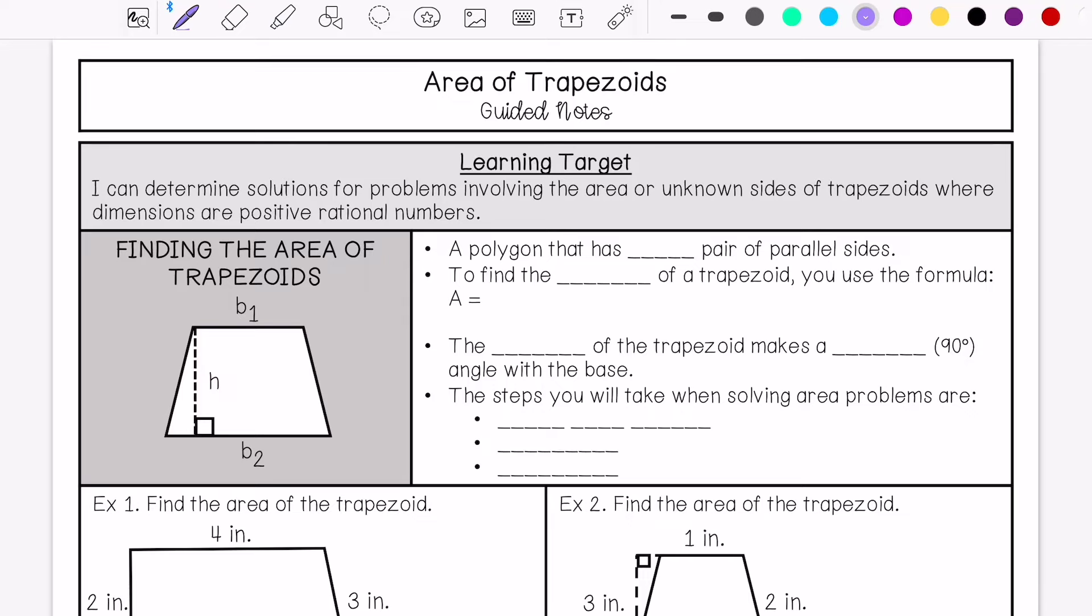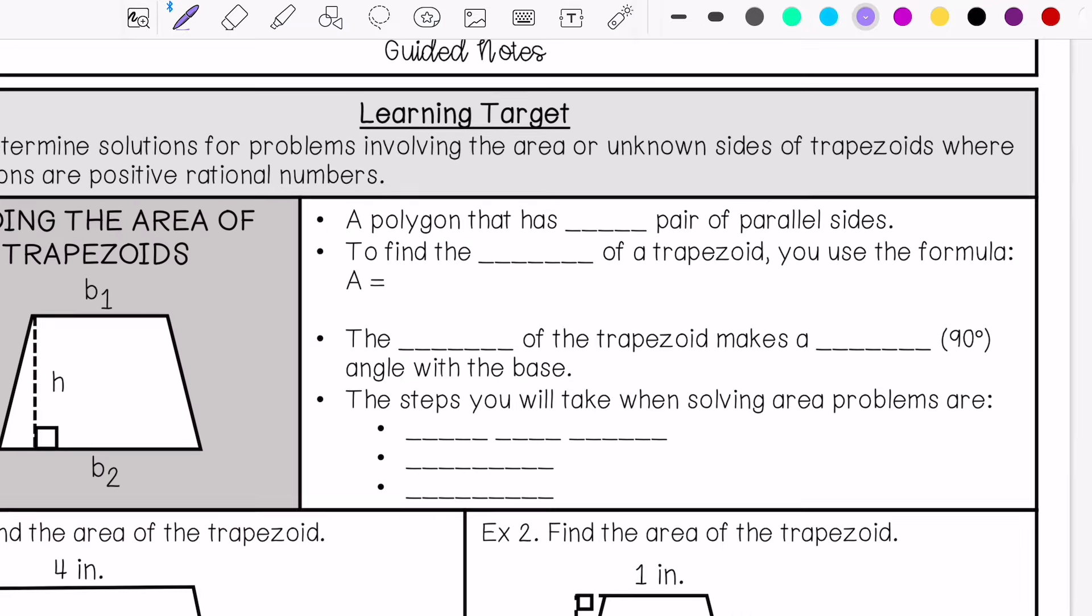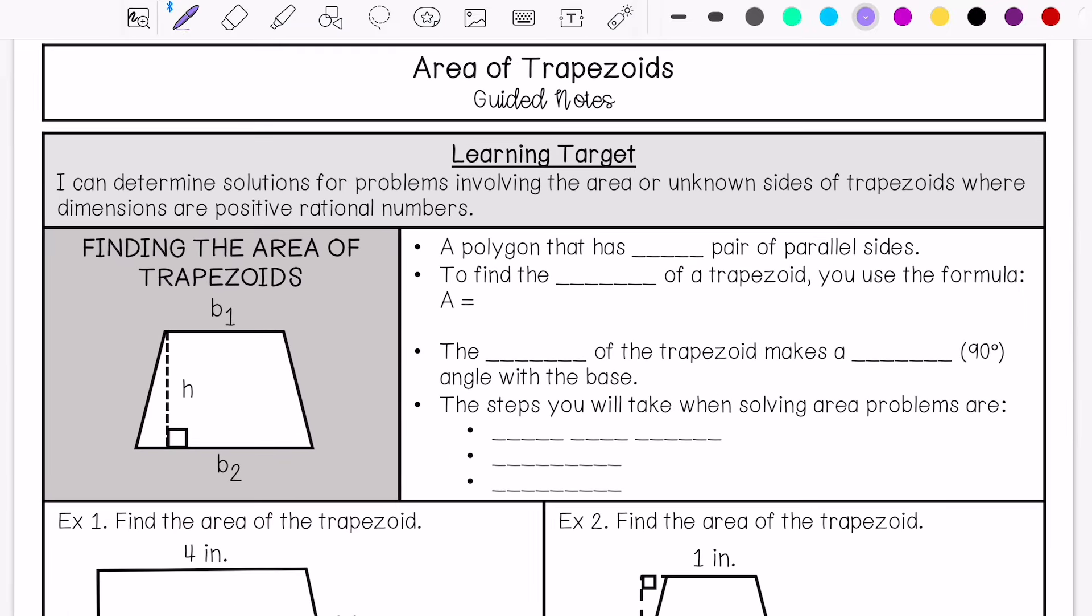My learning target is I can determine solutions for problems involving the area or unknown sides of trapezoids where dimensions are positive rational numbers. So we are going to find the area of a trapezoid.